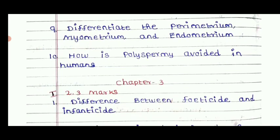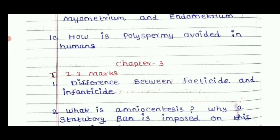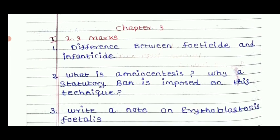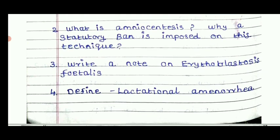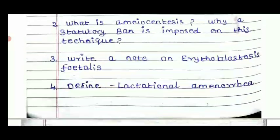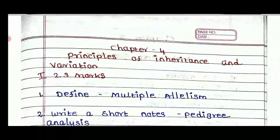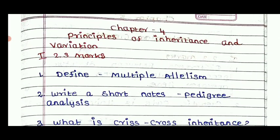For Chapter 3, Reproductive Health, there are important questions worth 2 marks, 3 marks, and 5 marks. Key topics include definitions and important distinctions. The 5-mark questions are especially important — a PDF link is provided. Topics include the principle of variation and definitions related to reproductive health.